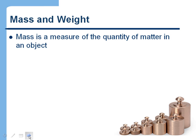Mass is a measure of the quantity of matter in an object. And what we mean by that is really the mass of an object just depends on the number of protons, neutrons, and electrons that make up the object. So that's really what we mean by it's a measure of the amount of matter in an object.